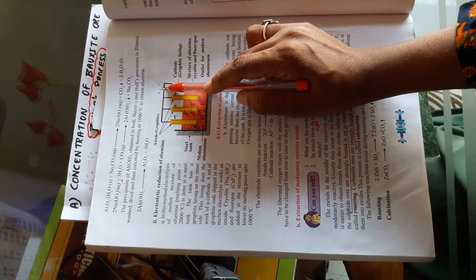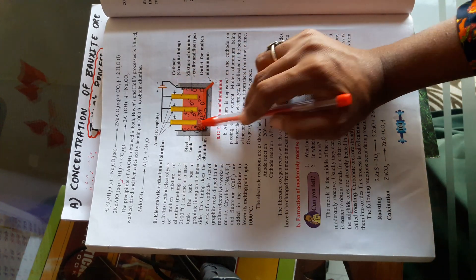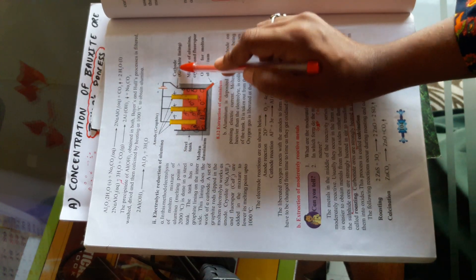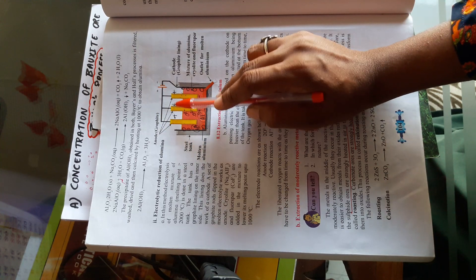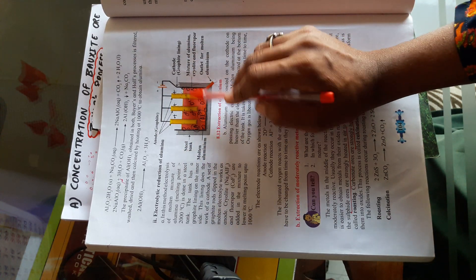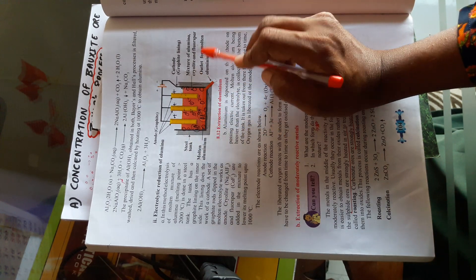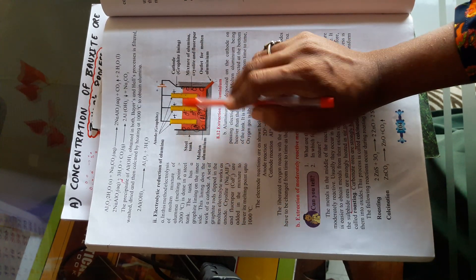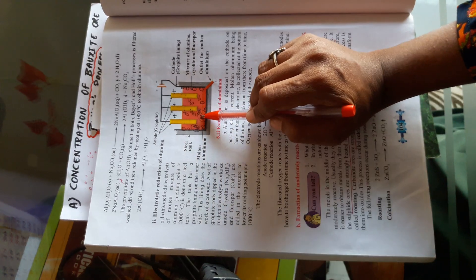So let us see. This is the negative terminal of battery or cell, so this graphite lining is the cathode region. And positive terminals, we have connected rods. These rods are dipped in mixture of alumina. So mixture of alumina, cryolite and fluorospar. Basically, this is cathode and anode.